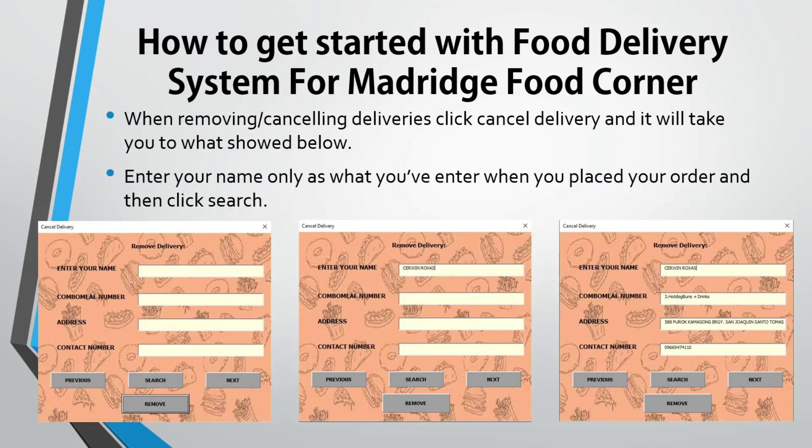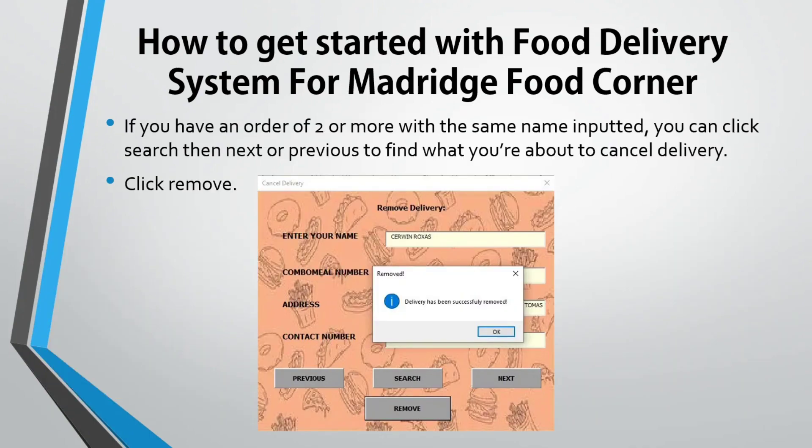When removing or canceling deliveries, click Cancel Deliveries and it will take you to the screen shown. Enter your name exactly as you entered it when you placed your order, then click Search. If you have 2 or more orders with the same name, you can click Next or Previous to find the one you want to cancel, then click Remove.